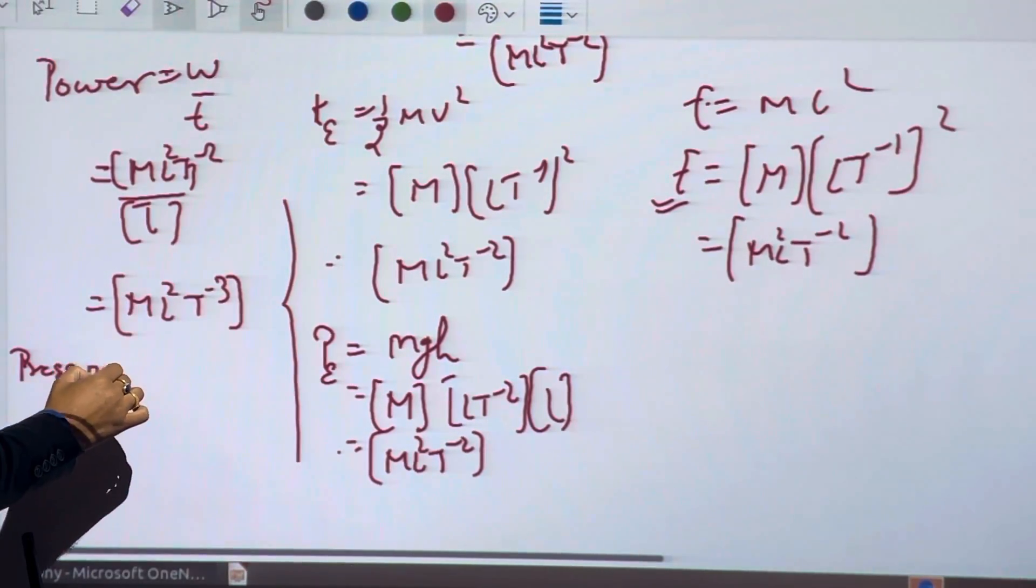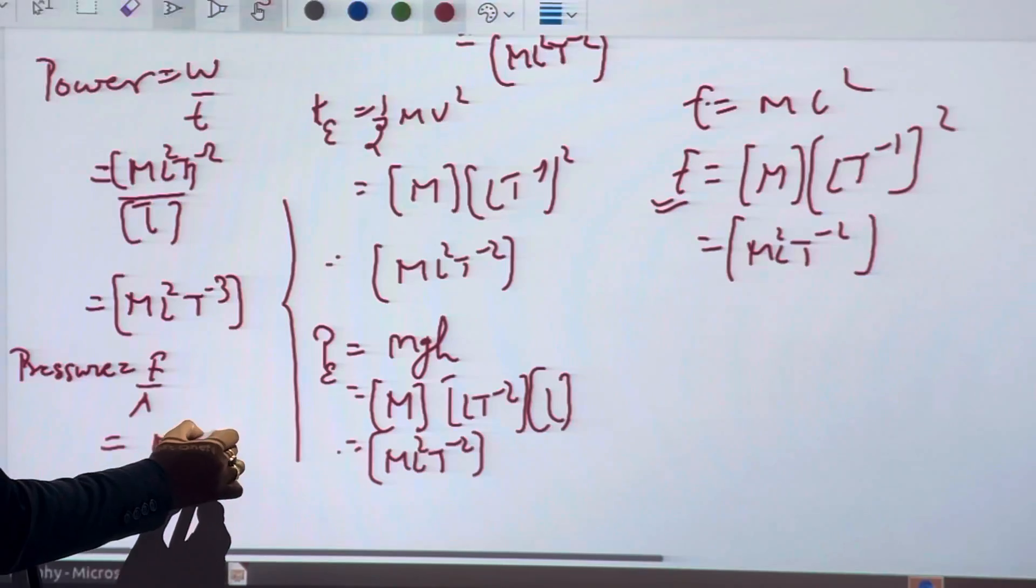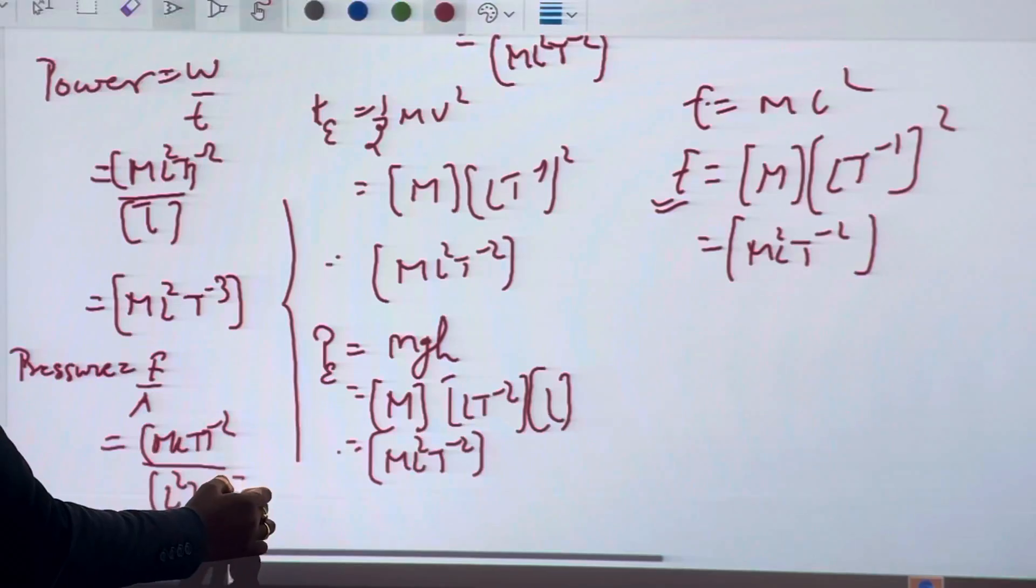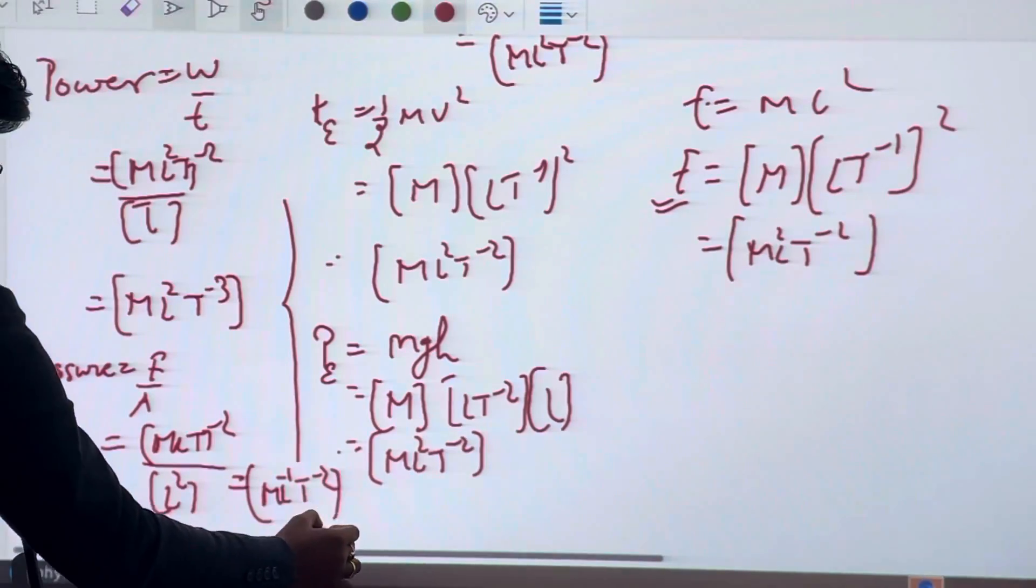Pressure is force upon area. Force acting per unit area is called pressure. F is MLT minus 2 upon area L², so dimension is ML⁻¹T minus 2.